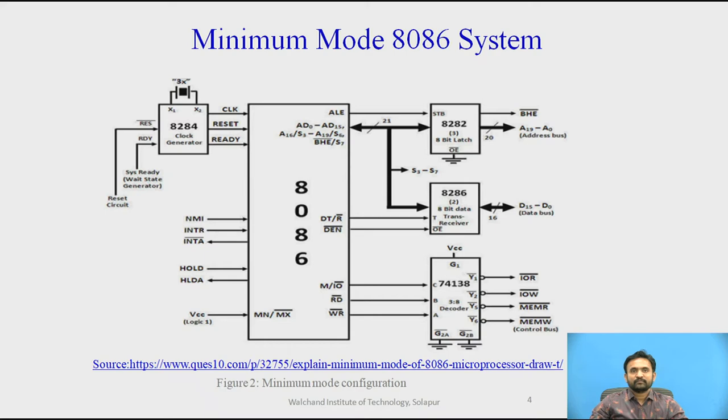Here the block diagram consists of components in the system: latches, transceivers, clock generator, memory, and I/O devices. Clock is provided by the 8284 clock generator. It provides clock, reset, and ready input to the 8086.